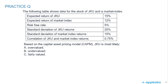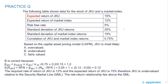Second practice question: Data is provided for stock JQU and a market index. The expected return of the stock is 15%, the expected return of the market index is 12%, the risk-free rate is 5%, the standard deviation of stock returns is 20%, the standard deviation of market returns is 15%, and the correlation between JQU and market index returns is 0.75. Based on CAPM, is JQU most likely overvalued, undervalued, or fairly valued?